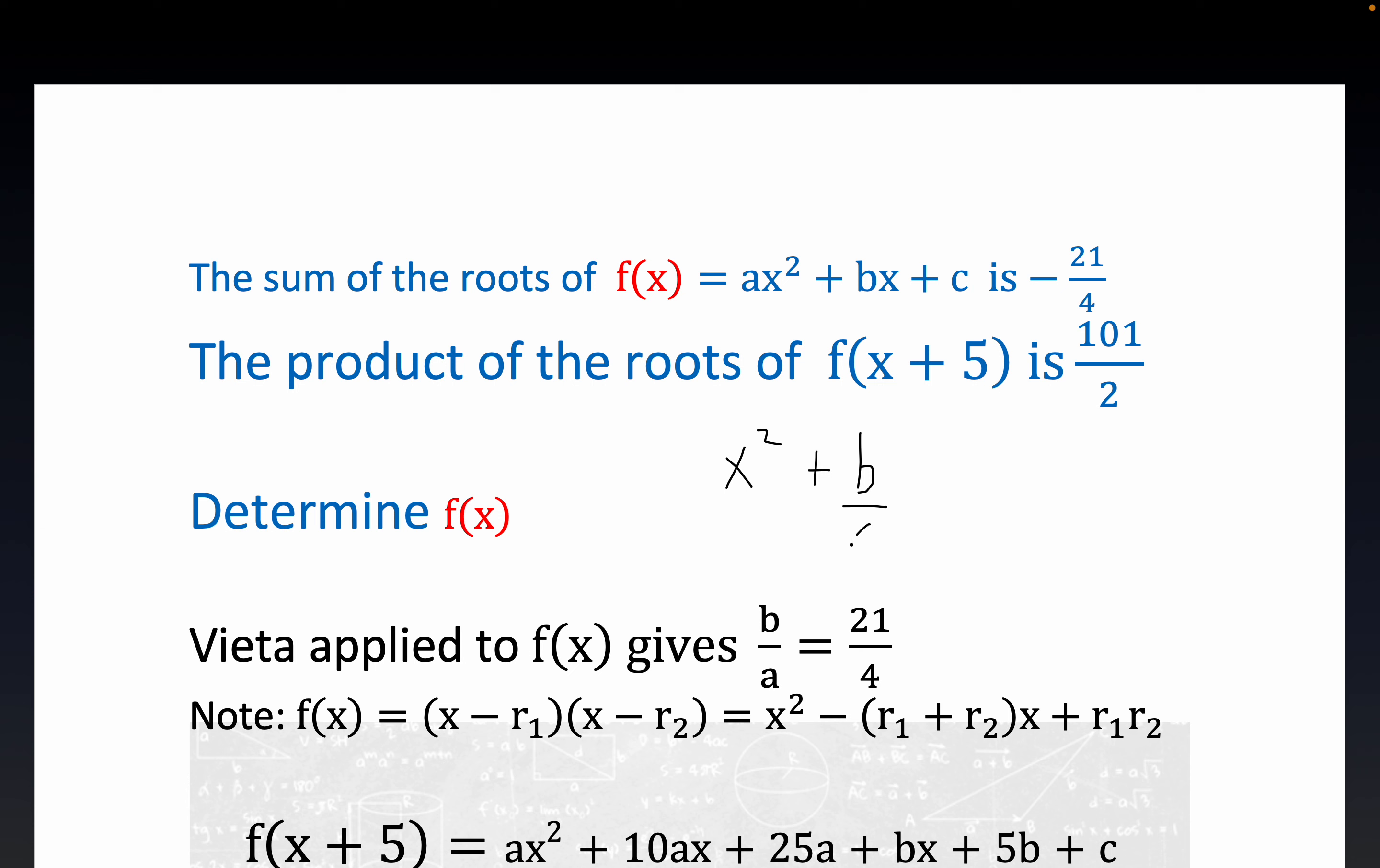So it's B over A X plus C over A. And we are talking about finding the zeros. So we set it equal to zero, then we divide it through by the leading coefficient, which gives us an equivalent expression.